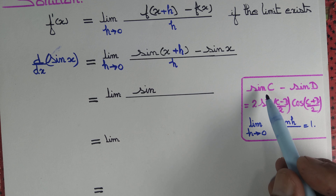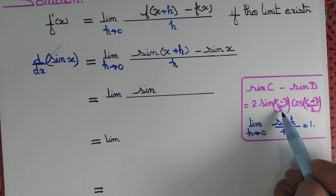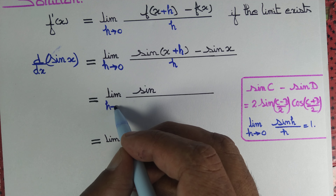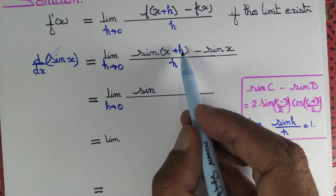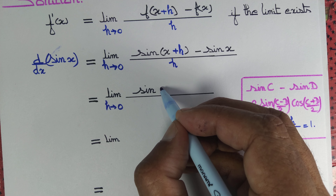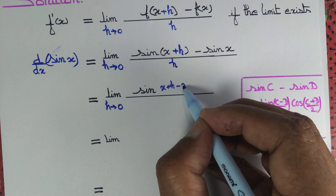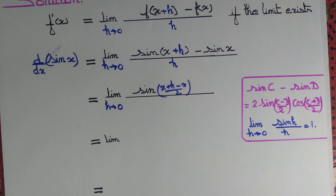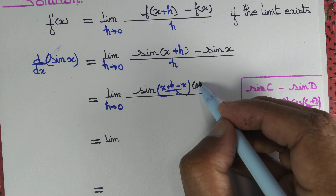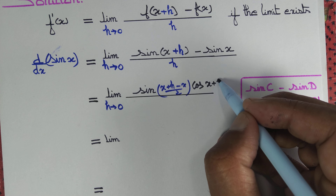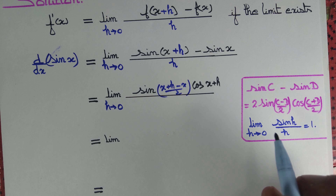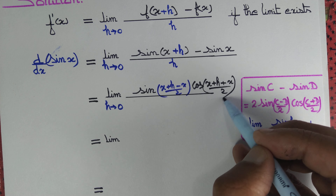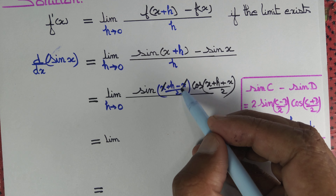Now, we know the formula: sin C minus sin D equals 2 sin((C-D)/2) times cos((C+D)/2). So, this limit equals the limit as h tends to 0 of 2 sin((x+h-x)/2) times cos((x+h+x)/2). You see that we can cancel x and x out, and we did it.